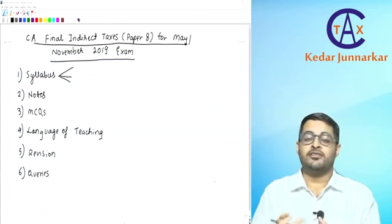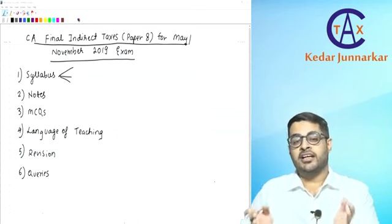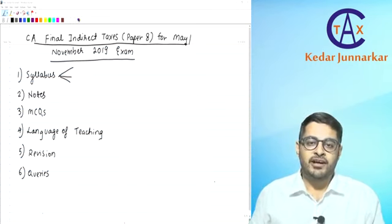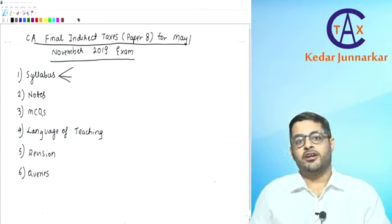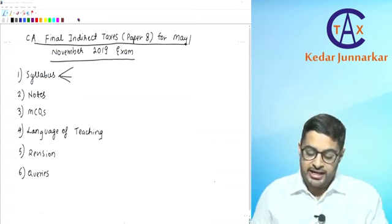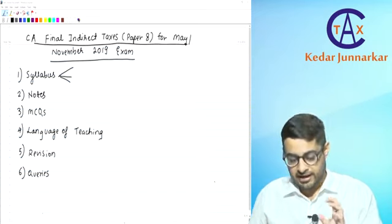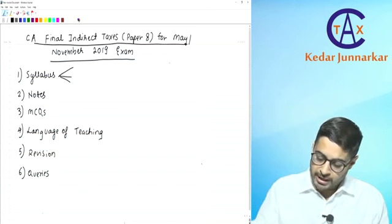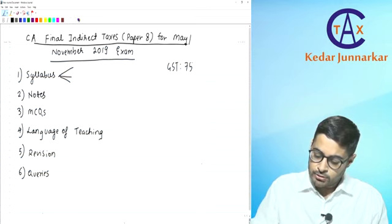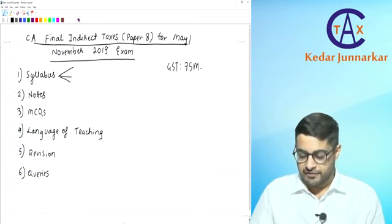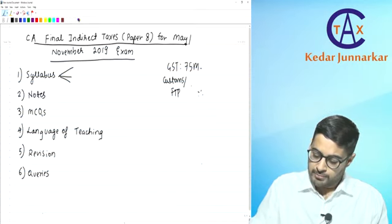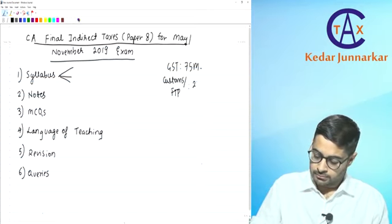We'll discuss how we are going to go about it, what the different things we are going to do in class, and how you are going to cope with the entire syllabus before your exam. The first point of discussion is the syllabus. Indirect Tax syllabus is 100 marks, divided into two parts: GST, that is Goods and Service Tax, for 75 marks, and Customs and Foreign Trade Policy for 25 marks.